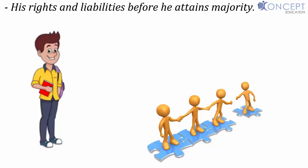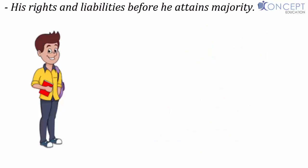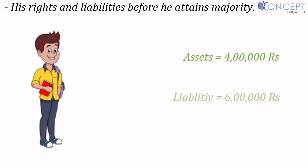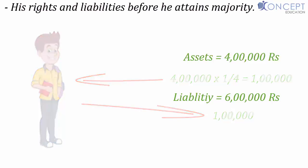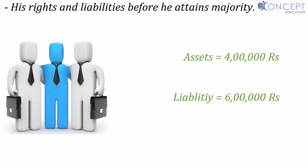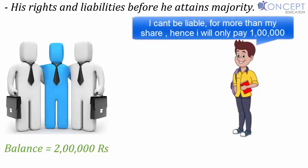If the firm performs poorly and dissolves, with total assets of four lakh rupees and total liabilities of six lakhs, then D's one-fourth share of assets equals one lakh. D would only be liable for that one lakh out of the total debt of six lakhs. The remaining four lakhs of assets would first be used to pay creditors, and the remaining two lakh debt would be borne personally by A, B, and C only. D is not personally liable beyond his share of profits and property.